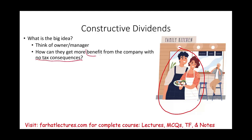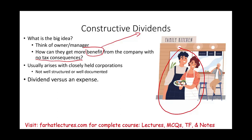If they try to get a benefit, the IRS might reclassify this benefit as a dividend. As a result, they cannot have a tax deduction and they will be taxed on that dividend. This usually happens in closely held corporations — it does not happen in publicly traded companies. Those closely held corporations are not well structured or well documented, and they will try to get money out via expenses, when in reality those may have to be classified as dividends.